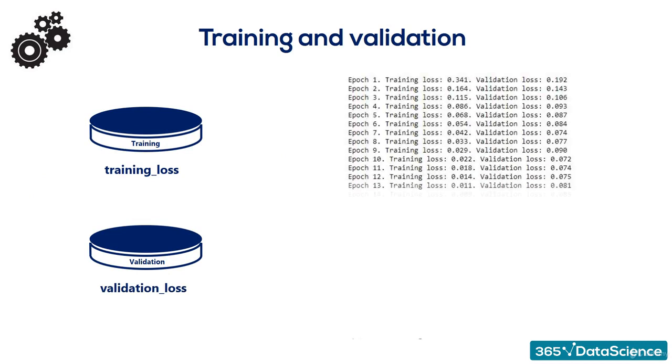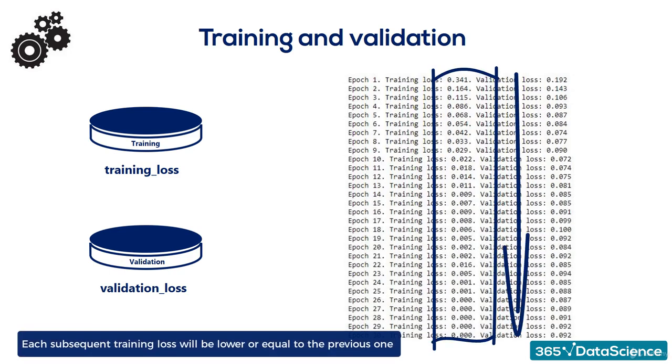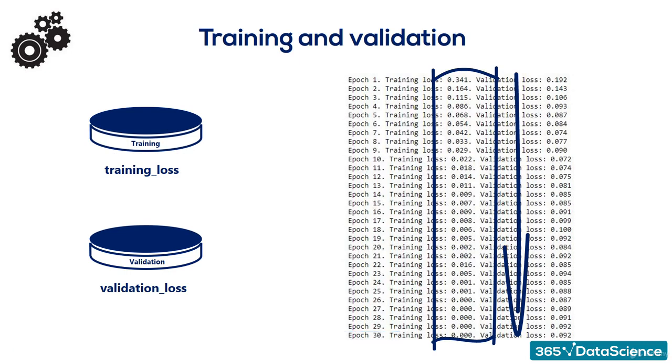And because the data in the training set is trained using the gradient descent, each subsequent loss will be lower or equal to the previous one. That's how gradient descent works by definition. So we are sure the training loss is being minimized.